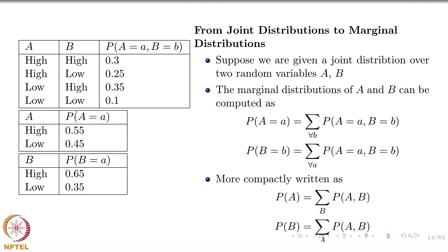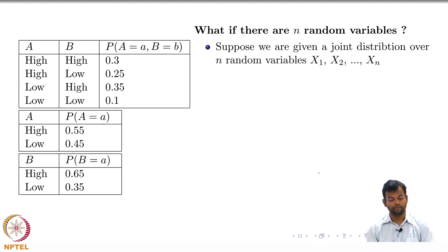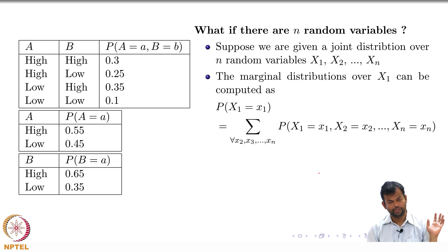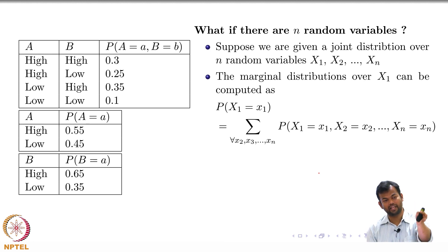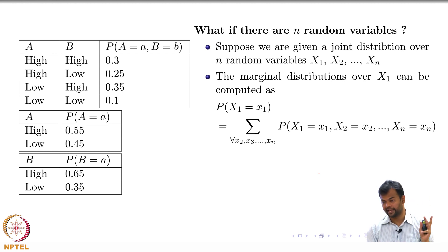There is a problem with this summation when dealing with N variables — we will come back to it in a few slides. Even so, if you are given N random variables and a joint distribution, you can get the marginal distribution for each of the N random variables by summing over all other variables. This is written compactly in standard notation.